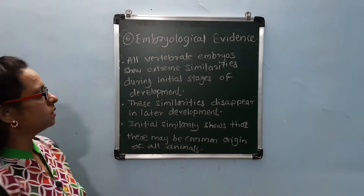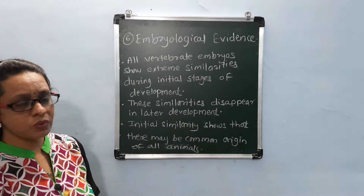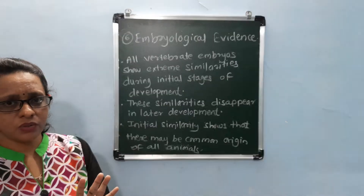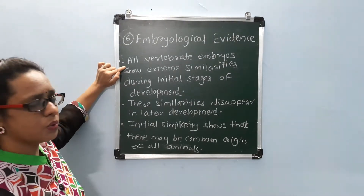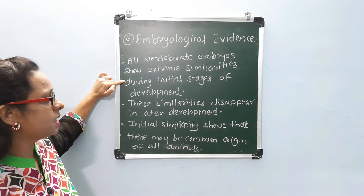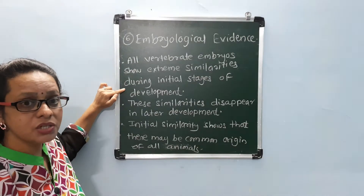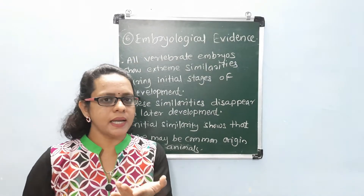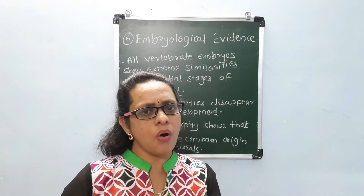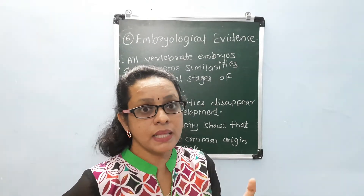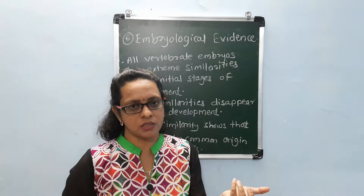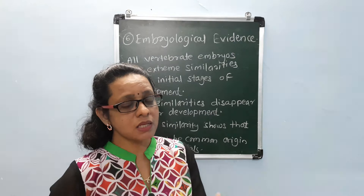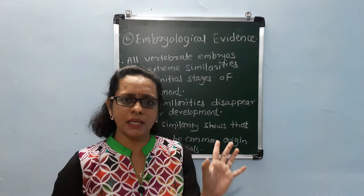Now let me study the sixth evidence of evolution — the embryological evidence. What is the meaning of embryological evidence? All vertebrate embryos show extreme similarities during initial stages of development. We can take the example of all vertebrate embryos when they are in the initial developing stages. During these initial developing stages, all these vertebrates show similarity in the developmental stages.